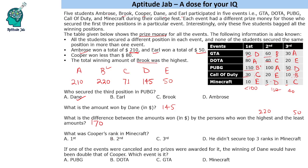What was Cooper's rank in Minecraft? We can see that Cooper was ranked third in Minecraft. Next question: if one of the events were cancelled and no prizes were awarded for it, the winning of Dane would have been double that of Cooper. We can check by options — C gets $71, and in other cases C will get a multiple of 10, so D should also get a multiple of 10.